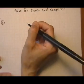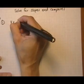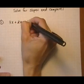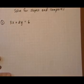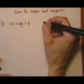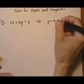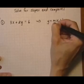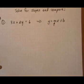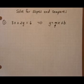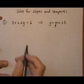So for the first equation, we have 3x plus 2y equals 6. And remember to solve for the slope, we want to get it into y equals mx plus b format, slope intercept form, and identify what is the slope. So that means we need to get y all alone on the left.